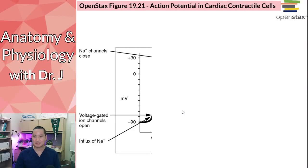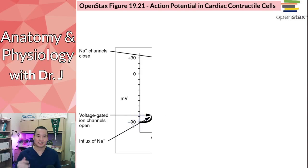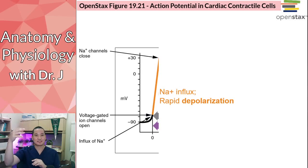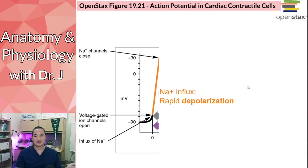This is a ventricular action potential. You start off in the negative here — notice that very negative membrane potential — and then it reaches a threshold, and then it starts opening these voltage-gated sodium channels. When it opens these sodium channels, all the sodium — remember you start off with more sodium on the outside, less sodium on the inside of the cell — sodium rushes inside the cell, causing depolarization.